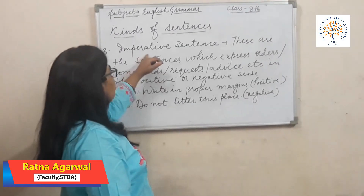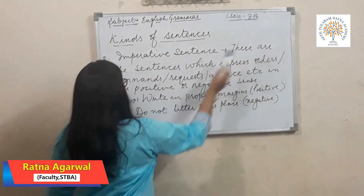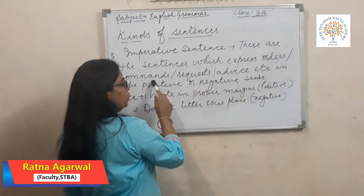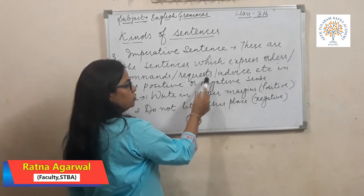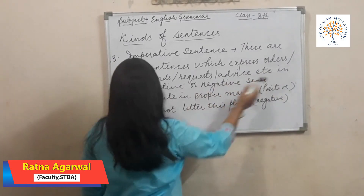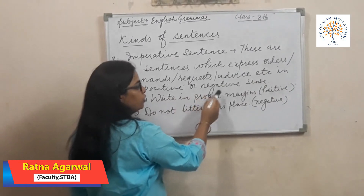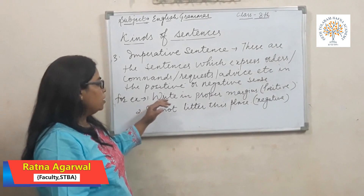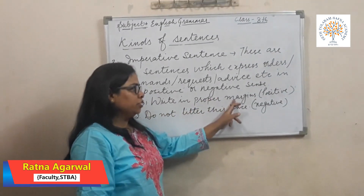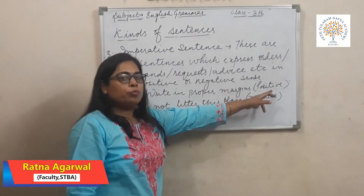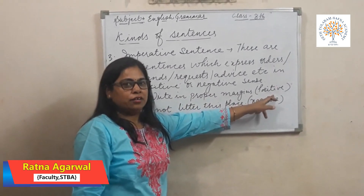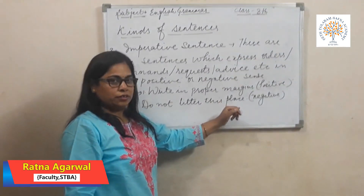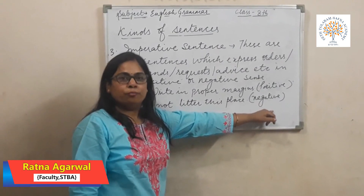Third is the imperative sentence. These are sentences which express orders, commands, requests, advice, etc. in the positive or negative sense. For example, 'write in proper margins' is in a positive manner, and 'do not litter this place' is in a negative manner.